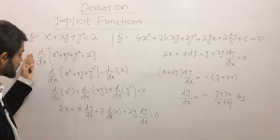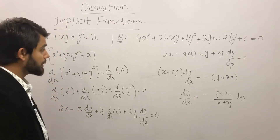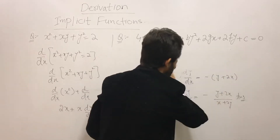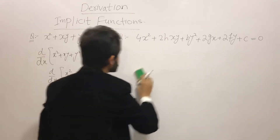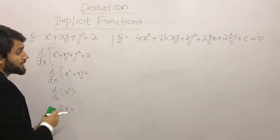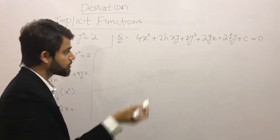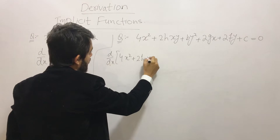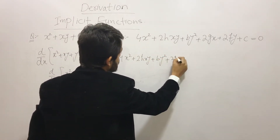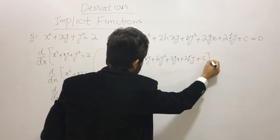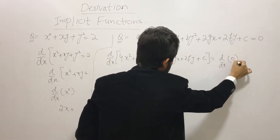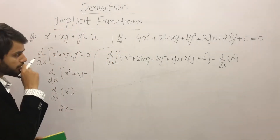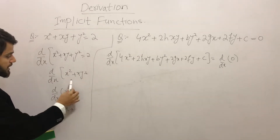I hope you have a copy and pen and are noting down every step. Now I will erase and move to the second example, which is more complex. We apply d/dx on both sides of the equation: 4x² + 2hxy + by² + 2gx + 2fy + c = 0.